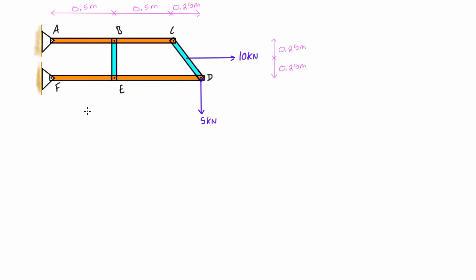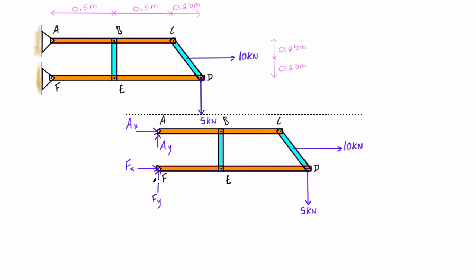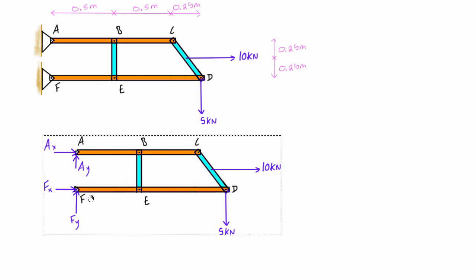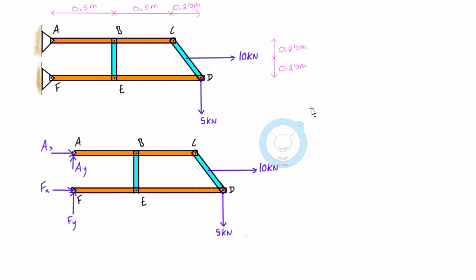To get started, the free body diagram of the whole thing looks like this. These are pin supports, so there is really only one force at each, but we break it out into two components: AX and AY, and FX and FY. We'll be able to solve for AX and FX. We'll start with the sum of moments about A.